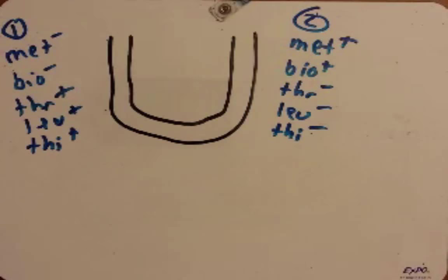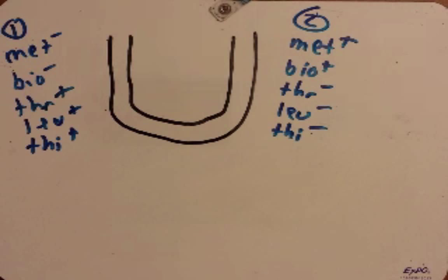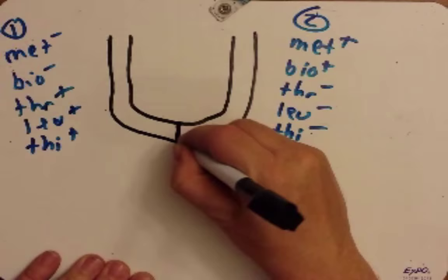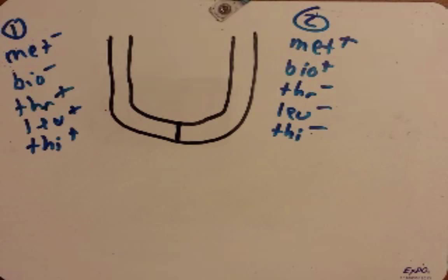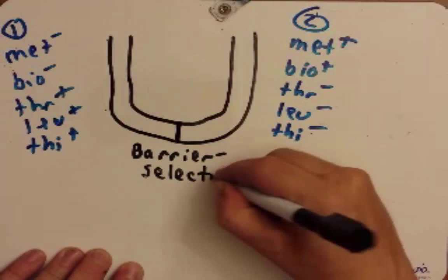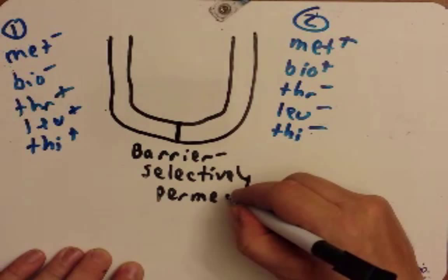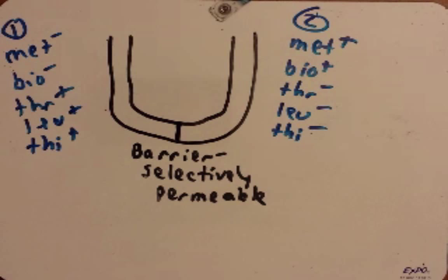We know if we mix these together in the same tube, we're going to get some cells that are completely prototrophic — able to make all five of these nutrients. We know if we grow these individually in separate cultures, we'll get no prototrophs; they will both remain auxotrophic. So the question is: do the cells have to physically come in contact with each other in order to produce a prototroph, or are they just transferring genetic material? What they did was put a barrier here.